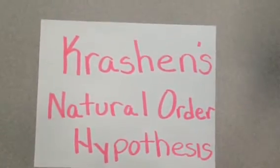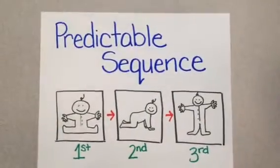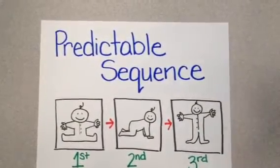Krashen's Natural Order Hypothesis: Predictable Sequence. Acquiring language happens in a predictable sequence.